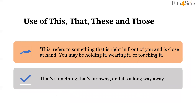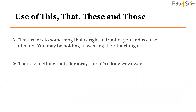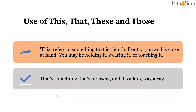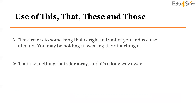Now we will discuss the use of this, that, these, and those. 'This' refers to something that is right in front of you — something you may be holding, wearing, or touching. 'That' is something that is far from us. We use 'that' for things far away. For example: